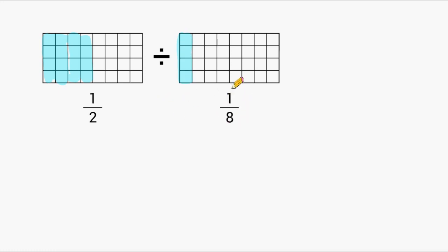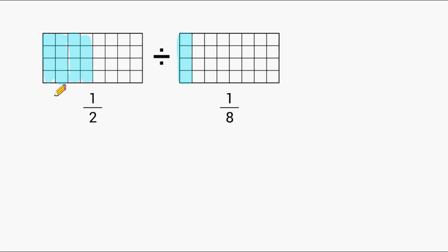If you take a look here, we could view this figure as having 8 rows — 1, 2, 3, 4, 5, 6, 7, and 8. I simply shaded 1 of those 8 rows. And we can look at the other figure and see we shaded 4 out of the 8 rows, which is also equivalent to 1 half.